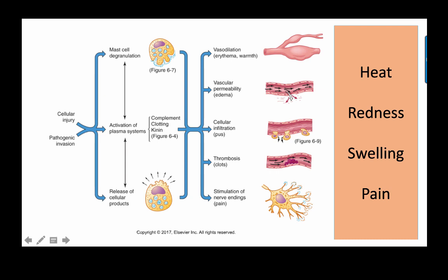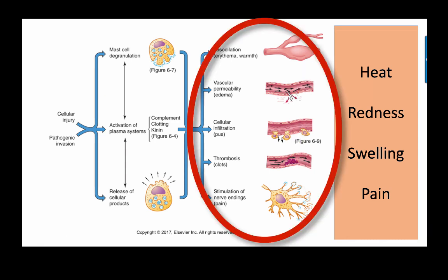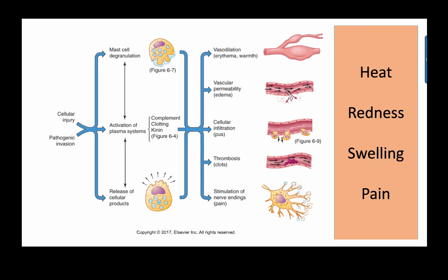Together, these processes produce the cardinal signs of inflammation: heat, redness, swelling, and pain. They do this by causing vasodilation, increasing vascular permeability which leads to edema, cellular infiltration by macrophages, clot or thrombosis formation, and pain — usually due to the bradykinin system. The exudate produced varies in composition depending on the stage of inflammation, how long the process lasts, and the nature of the initial stimulus.